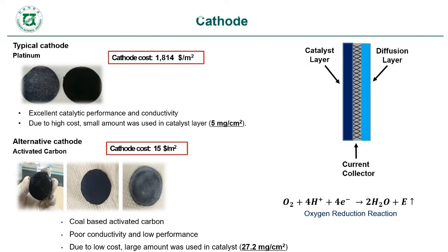The most important part of the MFC is the cathode, where reduction of oxygen occurs. The cathode has three main parts: the catalyst layer, the current collector, and the diffusion layer. On the cathode, the oxygen reduction reaction occurs as shown in the equation.